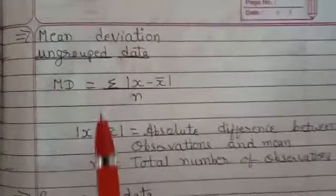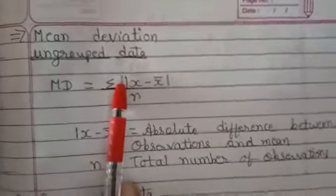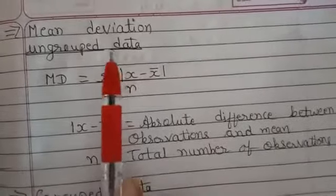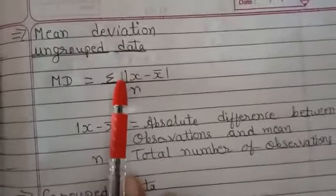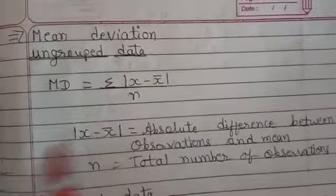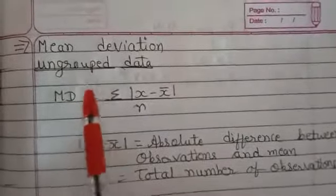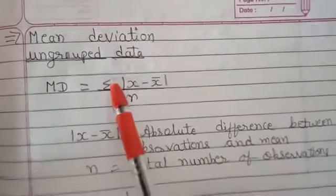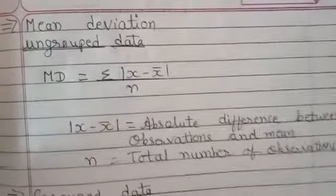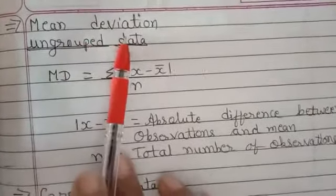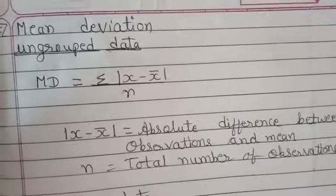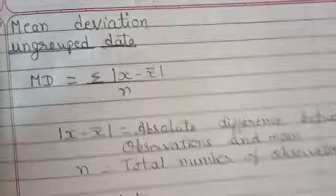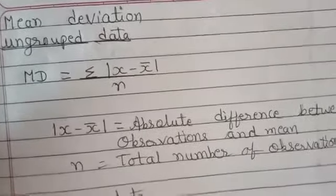Mean deviation. In mean deviation, as I already told, what we are doing is finding the deviation from the mean — how much all the observations are deviated from the mean. The definition of mean deviation is: the mean of the absolute deviation of the observations of a data from its mean is called mean deviation.